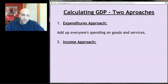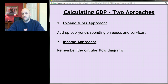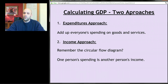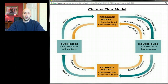The second approach is called the income approach — this is the one you just need to know about but don't need to know in depth. The income approach says: remember the circular flow diagram from first semester? One person's spending becomes another person's income. So another way to calculate GDP is to add up everyone's incomes, because everyone's spending turns into somebody else's income.